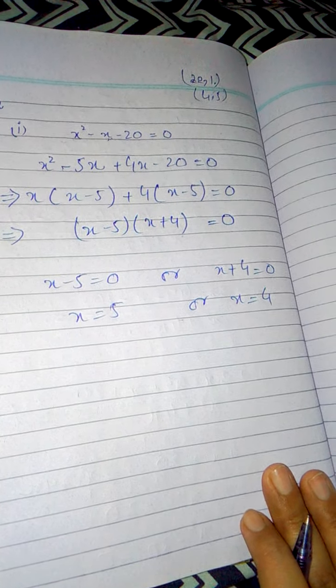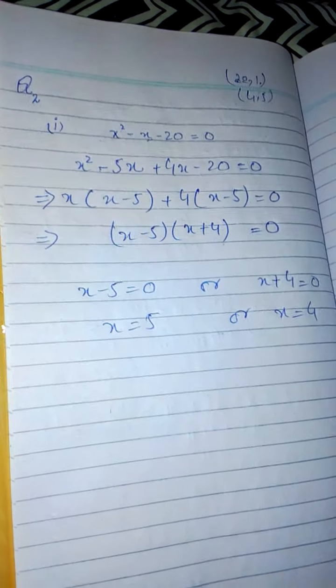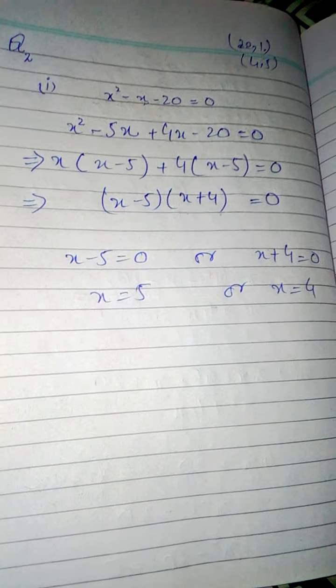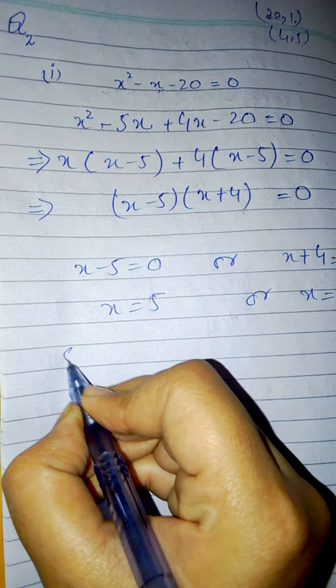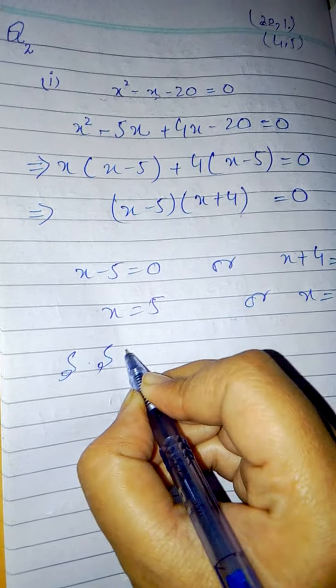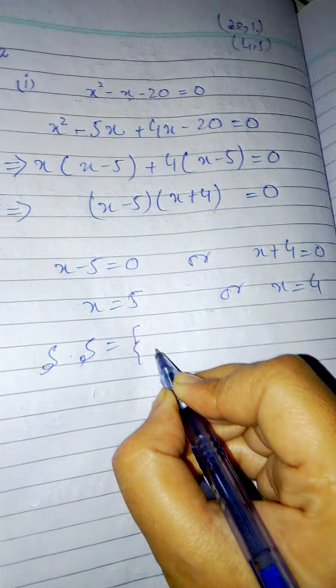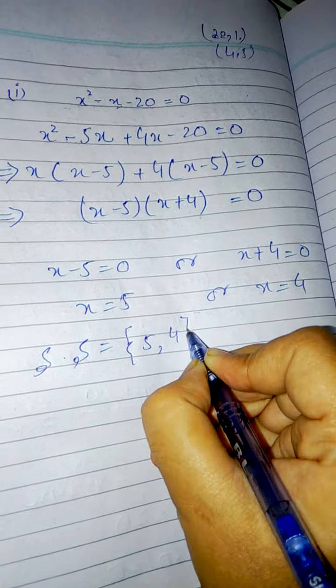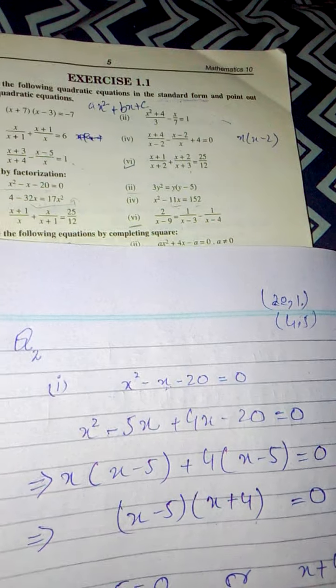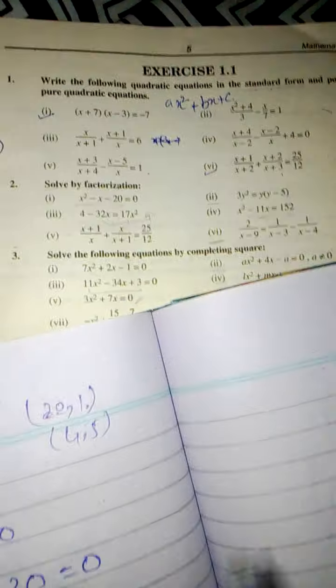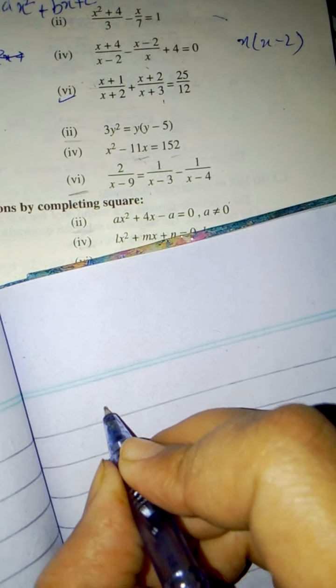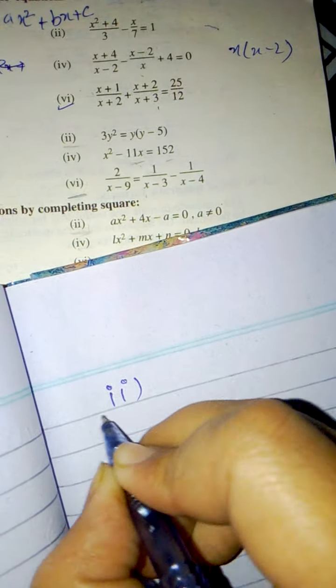Okay, we are done with this one. You can also check, but this question does not require checking. Therefore, you can directly write the solution set which includes values of x as 5 and negative 4. Now let's look at the second part. I am going to convert it on the paper.